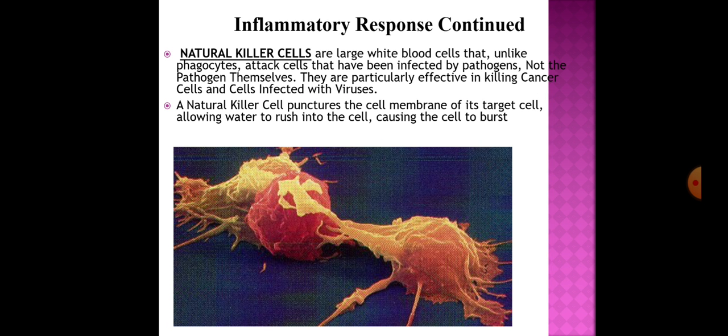Natural killer cells are large white blood cells that, unlike phagocytes, attack cells that have been infected by pathogens rather than the pathogens themselves. They are particularly effective at killing cancer cells and cells infected with viruses. A natural killer cell punctures the cell membrane of its target cell, allowing water to rush in and causing the cell to burst.